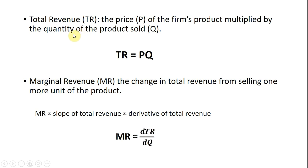Hello, in this video we're going to look at total revenue and marginal revenue. So some basics. Total revenue is the price of the firm's product times the quantity of the product sold. In shorthand notation, TR is total revenue and that equals P, the price of the product, times Q, the quantity sold.